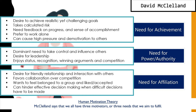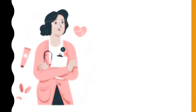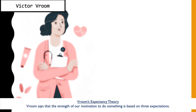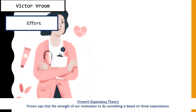Those are the three needs according to McClellan with their descriptions. I hope you were able to get it right — if not, don't worry, you can always rewind and try again. Now let's look at Victor Vroom, who talks about his Expectancy Theory. Vroom says that the strength of our motivation to do something is based on three expectations.